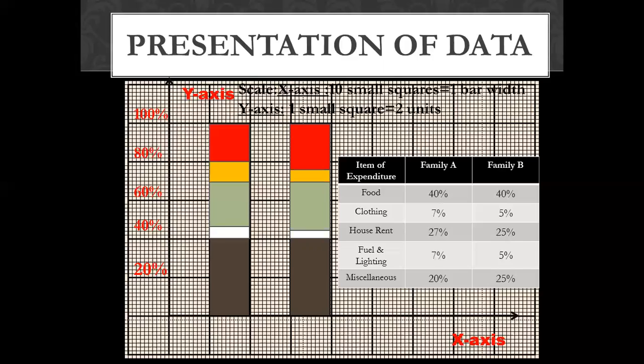As we first show, the brown color is showing for the first segment. The next color is white. Then clothing is shown in light green color. Next is yellow, and then blue color is used for the remaining segments.